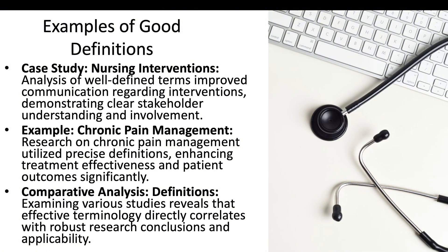Another example is chronic pain management. Research on chronic pain management utilizes precise definitions to enhance treatment effectiveness and patient outcomes significantly. Pain is often related to the efficacy of enhancing treatment and the outcomes of patients who are recipients of those treatments. Examining various studies reveals that effective terminology directly correlates with robust research conclusions and applicability.